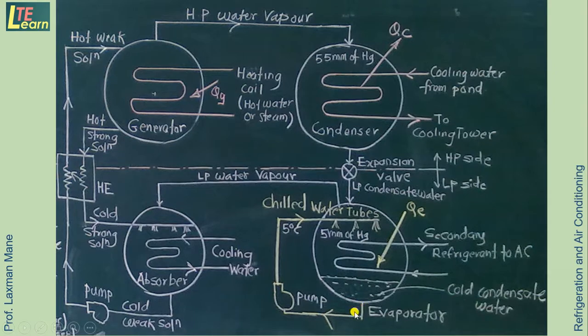And the cycle is repeated. So in this case the refrigerant as primary is circulated through this line in this way.